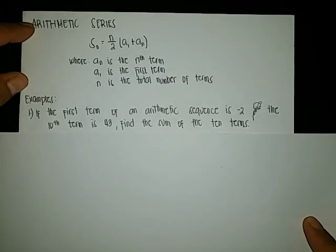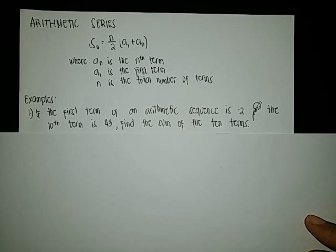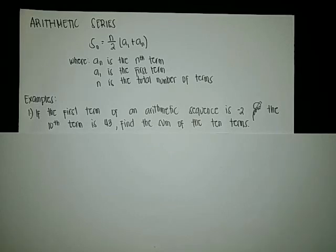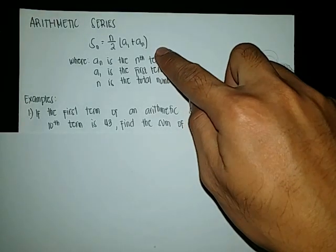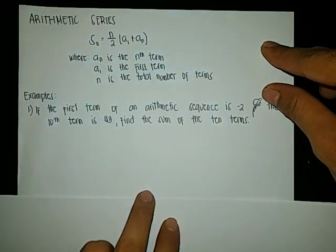Example number 1: If the first term of an arithmetic sequence is negative 2 and the 10th term is 43, find the sum of the 10 terms. On an arithmetic series, even if we do not have the values between the first term and the last term, we can still compute the arithmetic series using our formula. So let us now compute for the sum of the 10 terms.